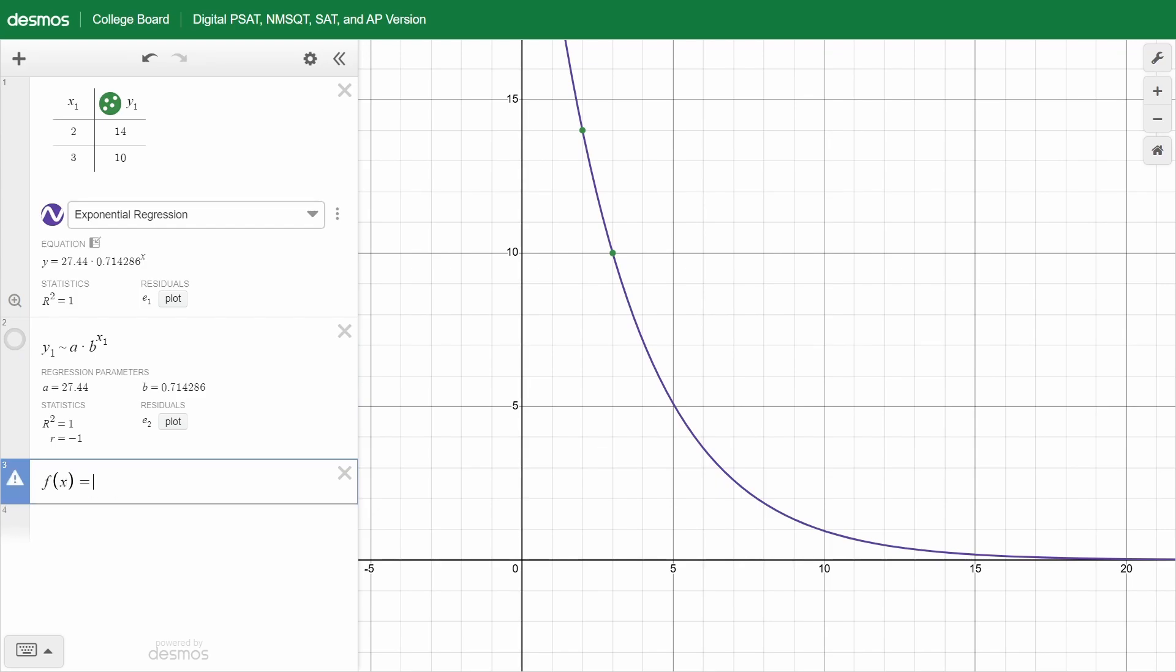So in this case, f of x equals a times b to the x. And this will use the exact values for a and b. So watch when I type in f of 4. I get the exact answer, which is 57.